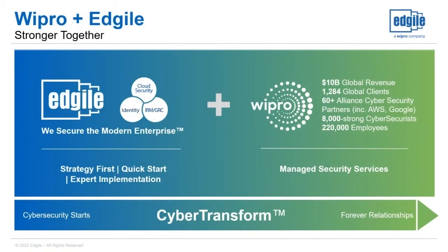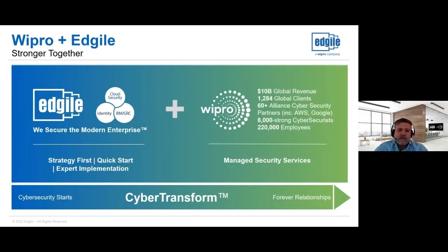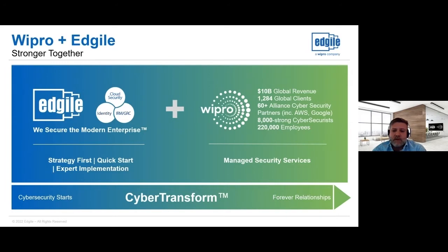For those who don't know us, we're a consulting company based out of Austin, Texas with many of us spread across the United States. Our three core services are cloud security focused on Microsoft, governance risk and compliance with a strong relationship with ServiceNow, and identity and access management. Agile serves more than 45 companies in the Fortune 500, including more than 12 in the Fortune 100. With the recent acquisition by Wipro, we now have a deeper and wider skill set and breadth of services.